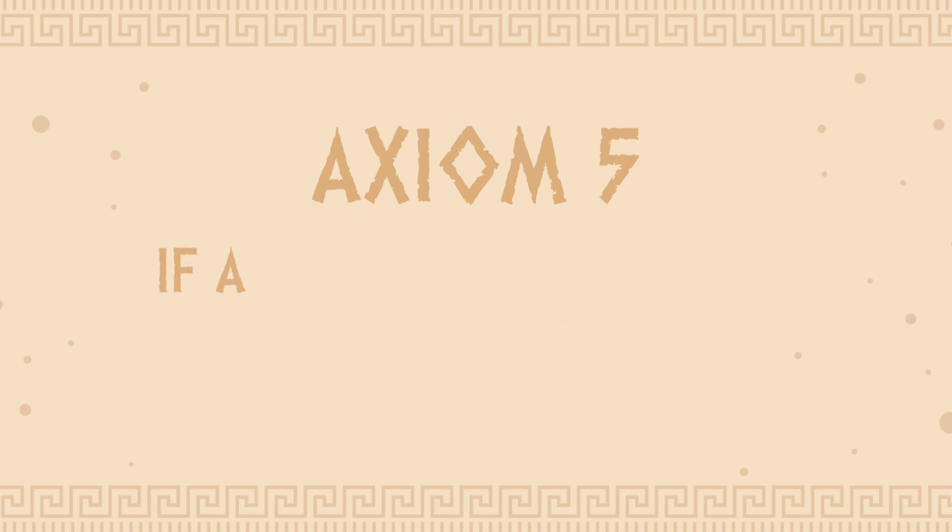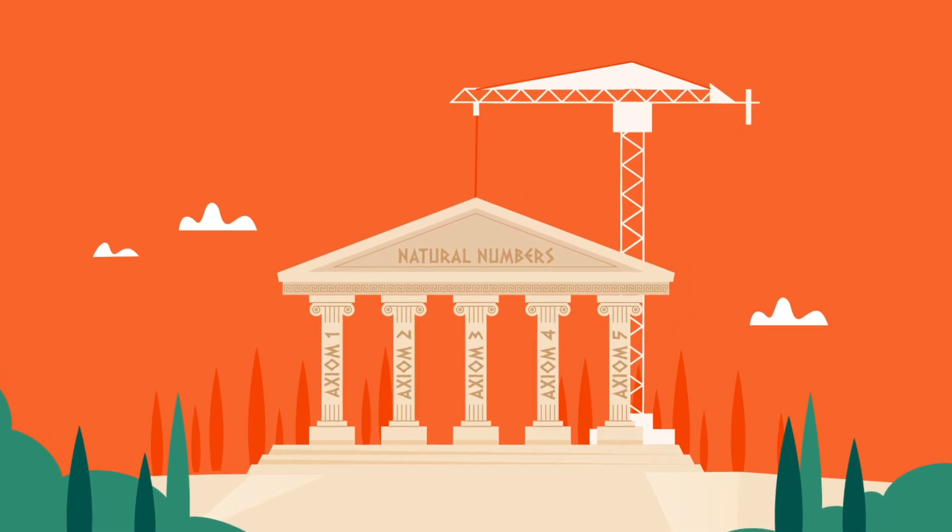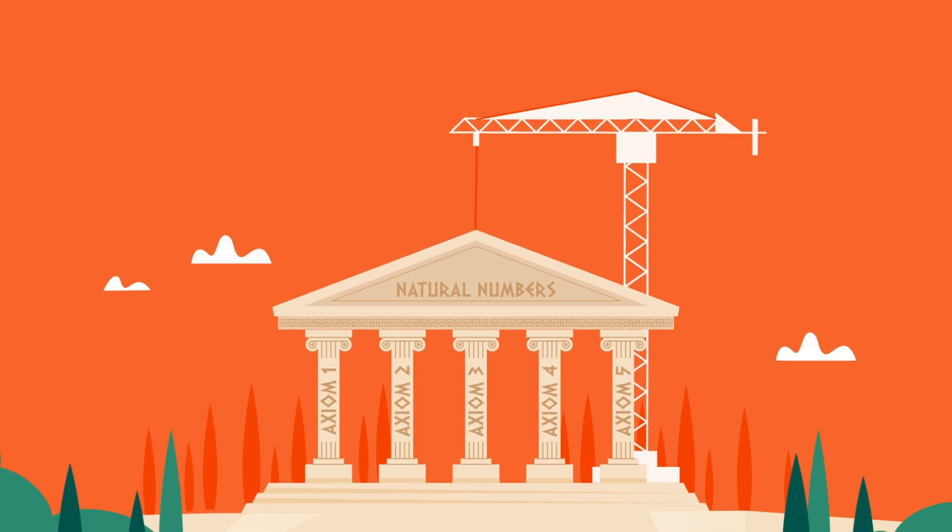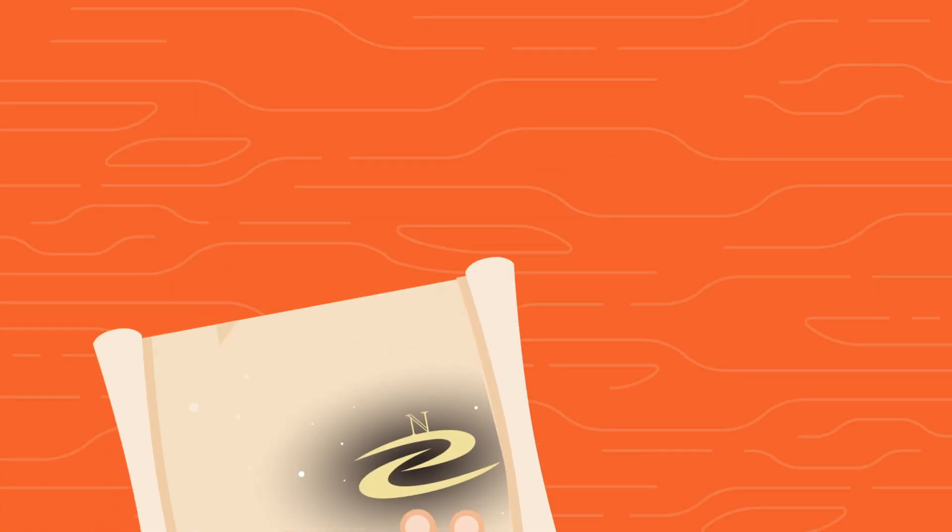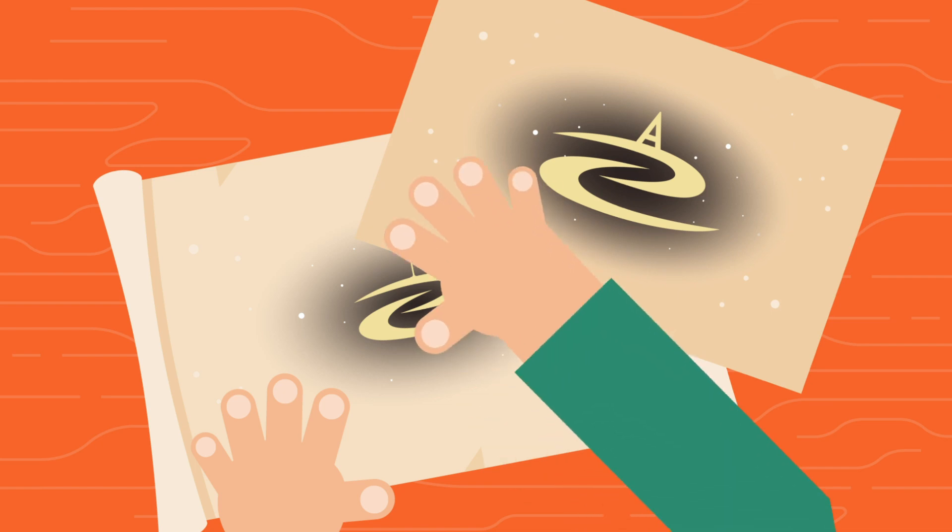Axiom 5, if a subset a contains 0, and if x is an element of a, and s of x is an element of a, then a equals n. Finally, welcome to our last axiom. The mathematical way of saying, our natural numbers are the set of numbers we have just created, and nothing else.